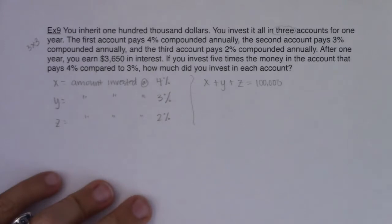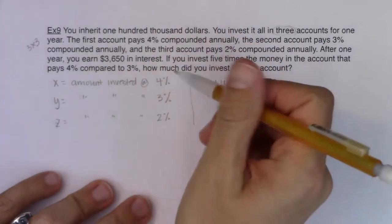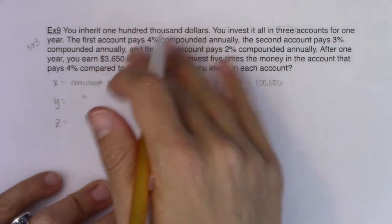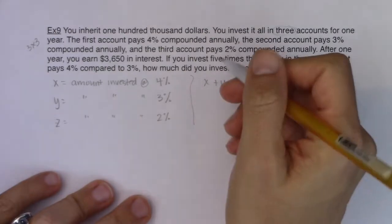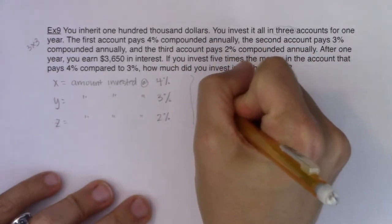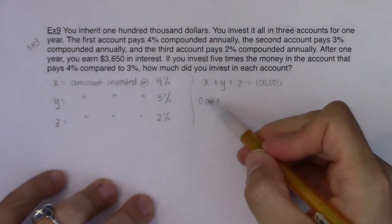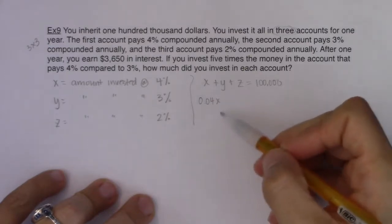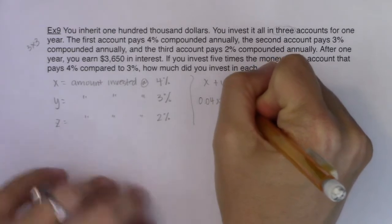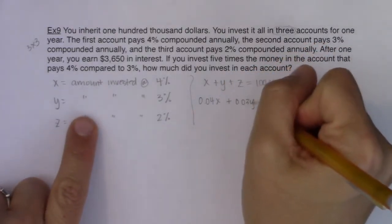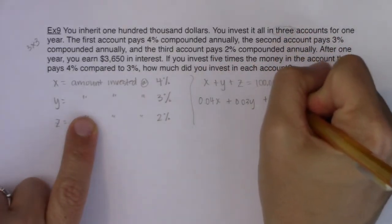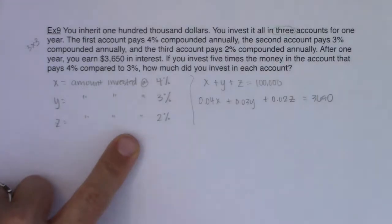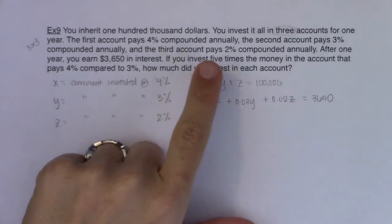I also see the $3,650 total interest. Since interest is compounded annually, there's a quick way to compute it: interest equals rate times principal. So if you put x dollars in the 4% account for one year, you earn 0.04x. Similarly, the 3% account earns 0.03y and the 2% account earns 0.02z. All of that interest must total $3,650. That gives me my second equation: 0.04x + 0.03y + 0.02z = 3,650.